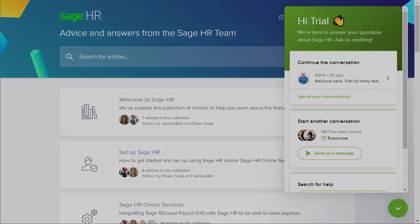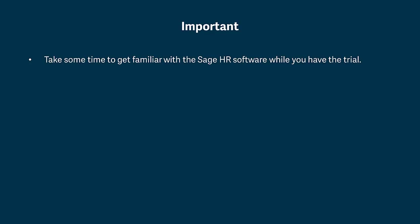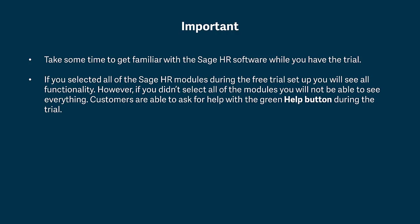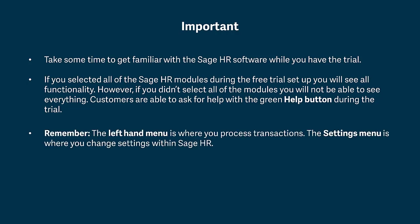Take some time to get familiar with the Sage HR software while you have the trial. If you selected all of the Sage HR modules during the free trial setup, you will see all functionality; however, if you didn't select all of the modules, you'll not be able to see everything. Customers are able to ask for help with the green help button during the trial. Remember: the left hand menu is where you process transactions, and the settings menu is where you change settings within Sage HR.